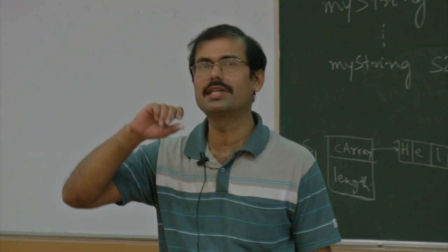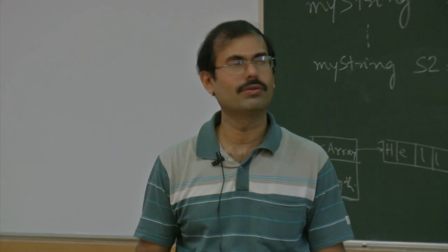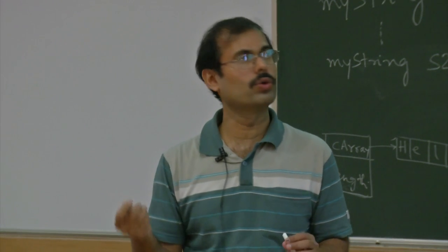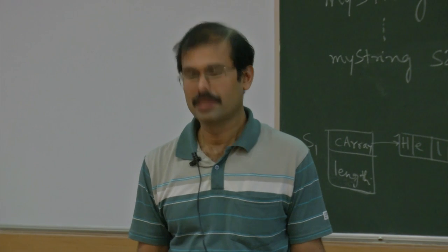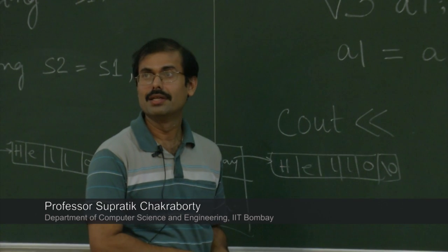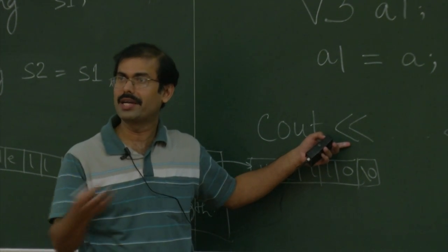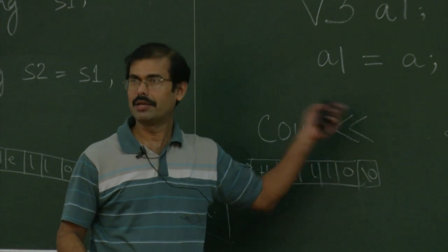At the very beginning of the course we said you cannot use plus, minus, etc. in function names — but here is an example of a member function where you can use plus, as long as 'operator' precedes it. So when we write cout << something, cout is actually an object of some class and << is an overloaded operator defined on that class. It is really like doing a plus b.